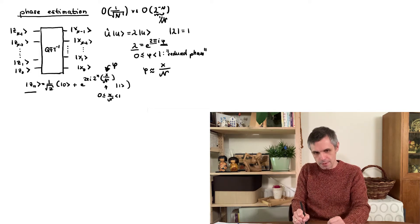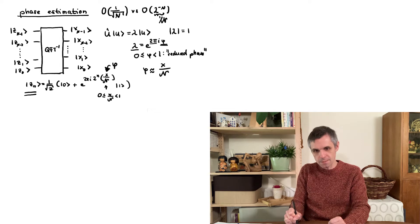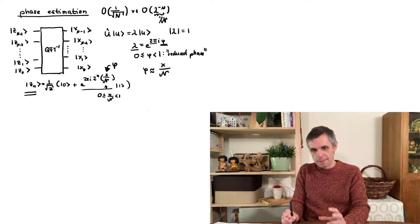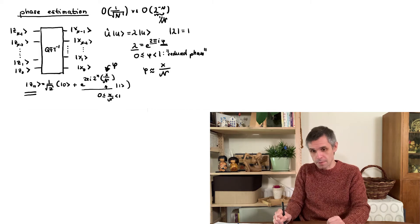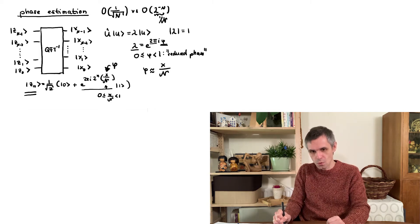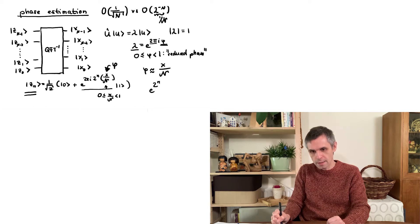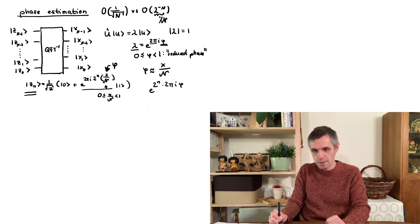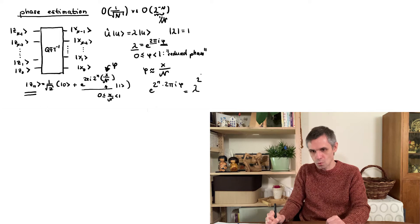So in other words, we need to bring our quantum bits into these states here with the correct phase factor in front of the state one. Well, this phase factor can actually be expressed in terms of the eigenvalues because what we have here is 2 to the n times 2 pi i phi in the exponent. And this is just the same as lambda to the power 2 to the n.